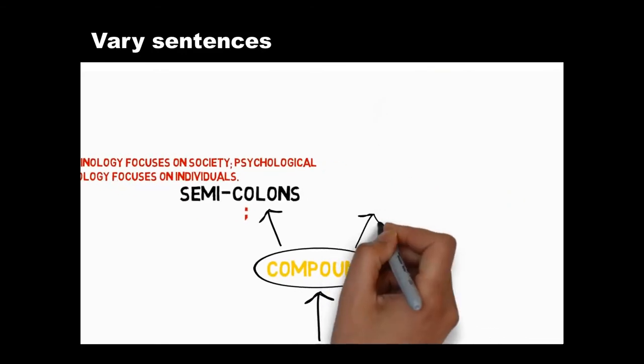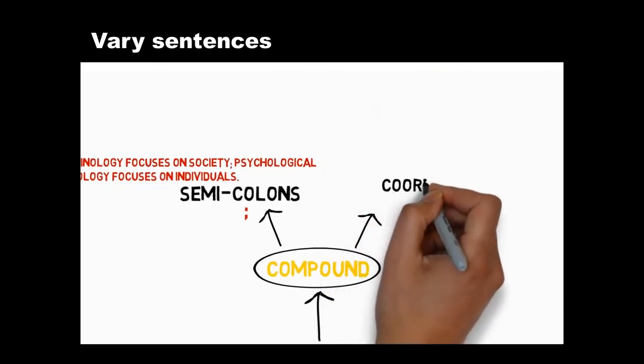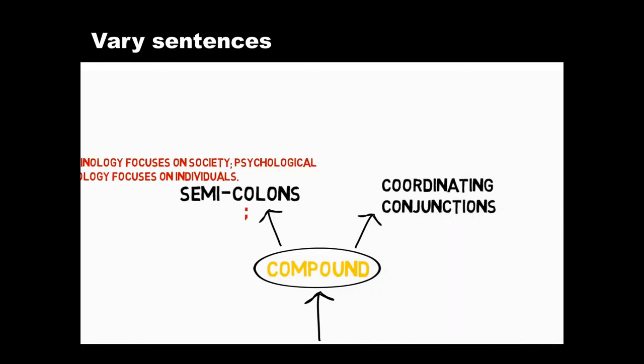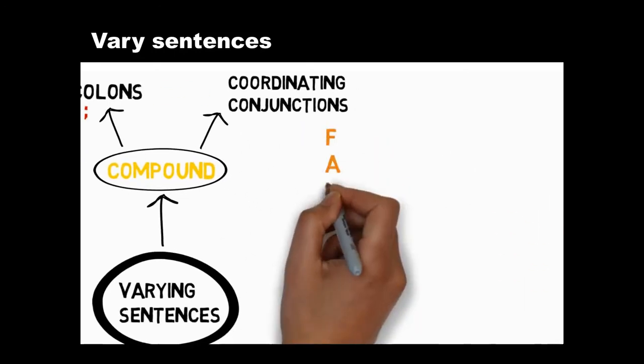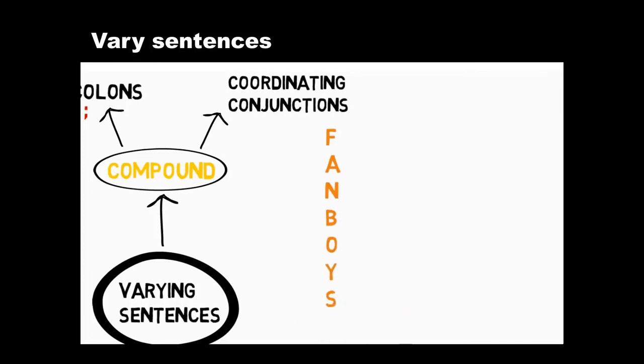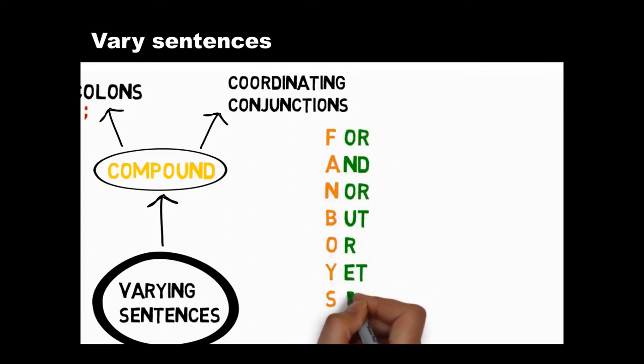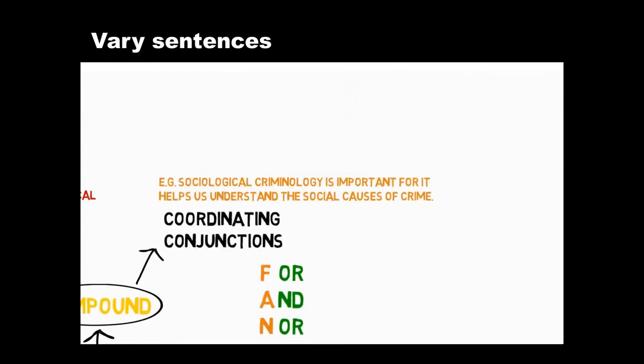The second kind of compound sentence uses coordinating conjunctions to join ideas. To remember what coordinating conjunctions are, just think of the word fanboys. Use the first letters of this word to remind you what they are. Coordinating conjunctions express simple relationships between equally important ideas like this.